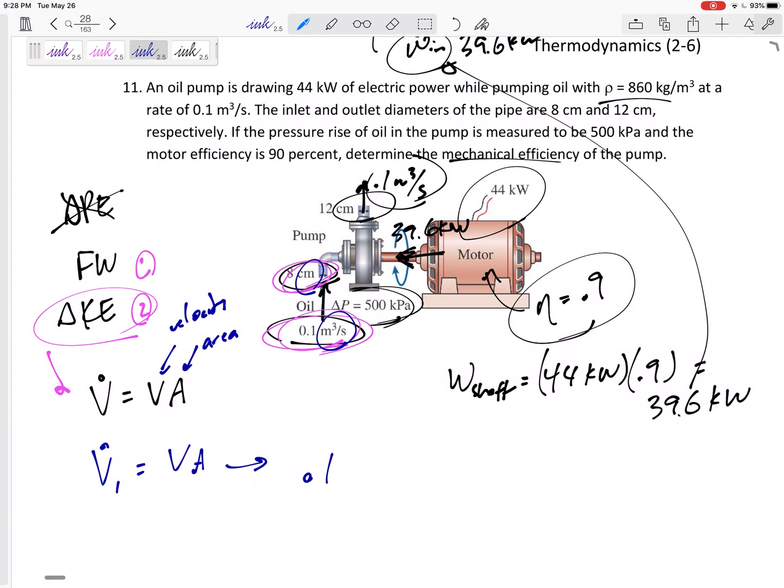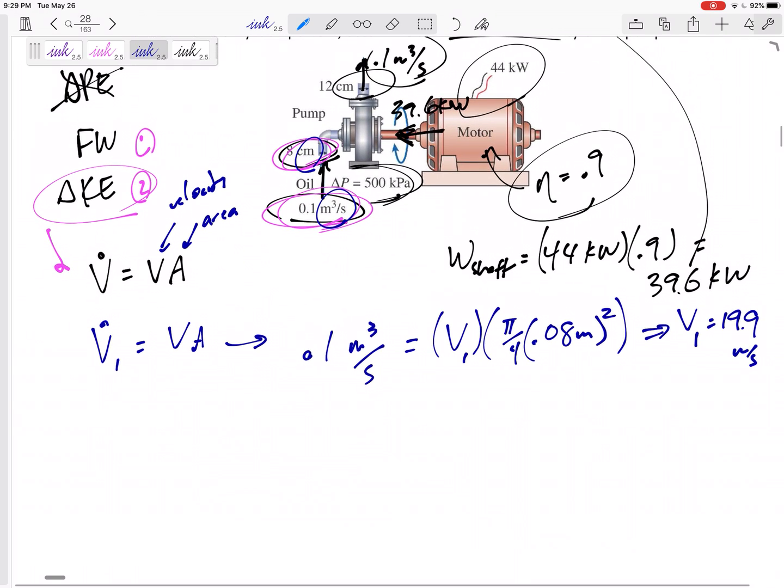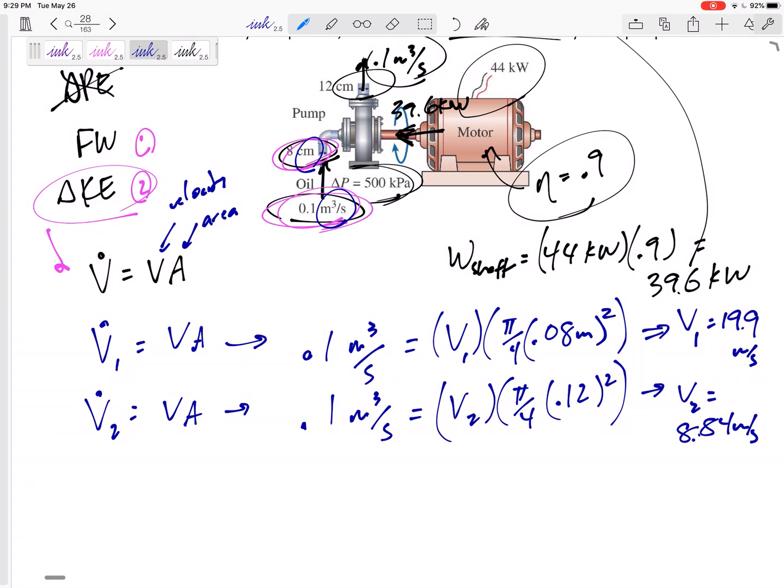Let's write it over here. I know that the volumetric flow rate is 0.1 meters cubed per second. That's going to be equal to the velocity that I'm trying to find times the area of π/4 diameter. Diameter is eight centimeters. Let's say 0.08 meters squared, π/4 diameter squared, right? Solve that for V1 is 19.9 meters per second. V1 is 19.9 meters per second. Whereas V2 is, same volumetric flow rate, would be V2 times it's π/4 times 0.12 squared. V2 would be 8.84 meters per second.